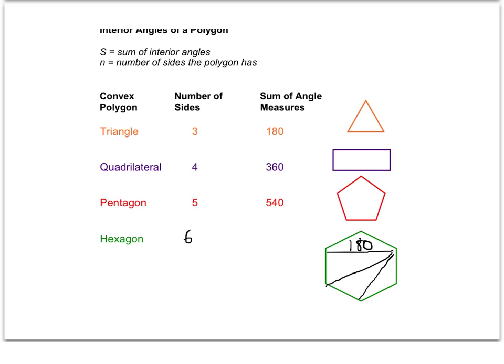We know that each triangle is 180 degrees, and in a hexagon, we have four triangles. Four times 180 degrees is 720.